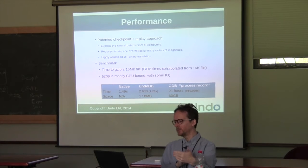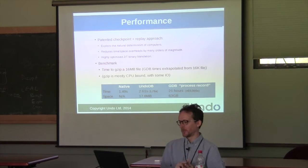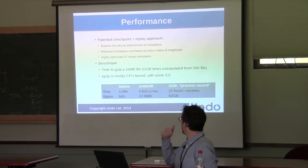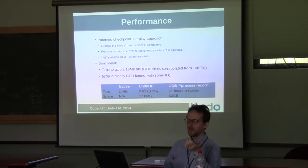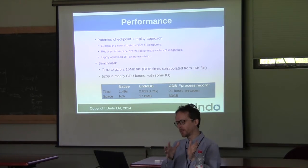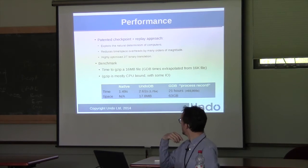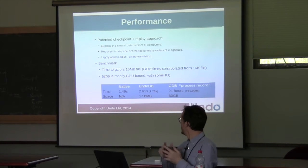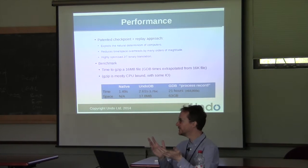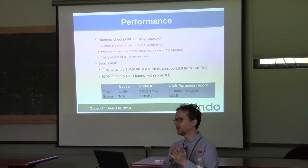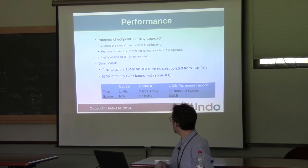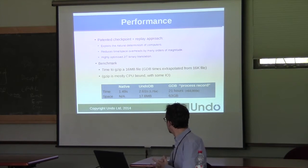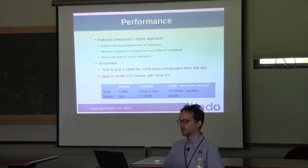This is an example of our efficiency. GDB has a very simple thing called process record that tries to do reversible debugging, but it's very slow. In this example, we've got a run of GZIP. Normally it takes one and a half seconds. With UndoDB it takes two and a half seconds. With GDB's process record, it takes nearly all day. So if you have a bug in GZIP, you can't debug it with process record, but you can with UndoDB. The space overheads with GDB are enormous, but with UndoDB they're fairly modest.